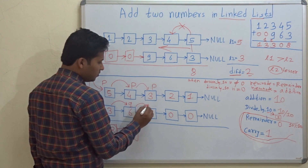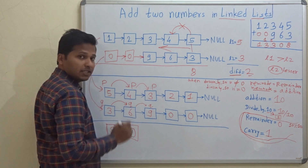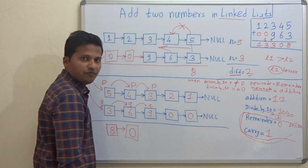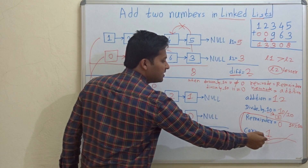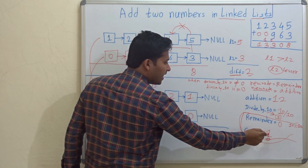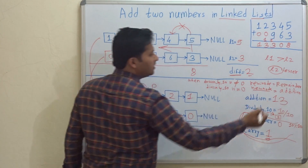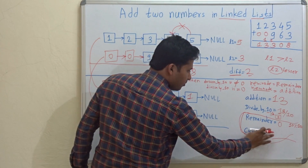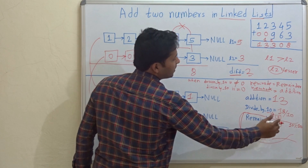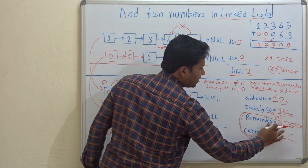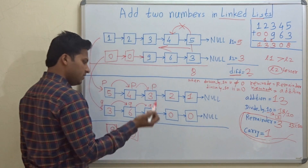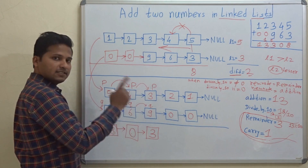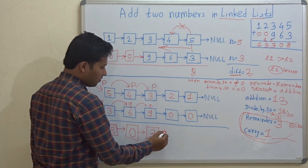P and q go ahead. Q comes to 9 and P comes to 3. 9 plus 3 is 12. Update the addition variable to 12. But in this iteration the carry is non-zero, so the carry adds to 12, making it 13. The regular procedure: 13 divided by 10 is 1, so carry is updated to 1. The remainder of 13 divided by 10 is 3. Create a new node and write remainder 3 in that node, since the division is non-zero.